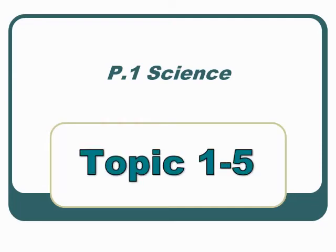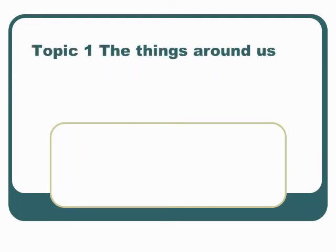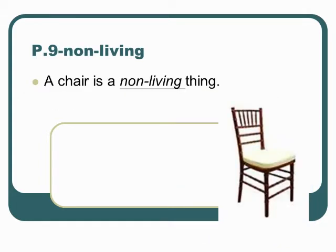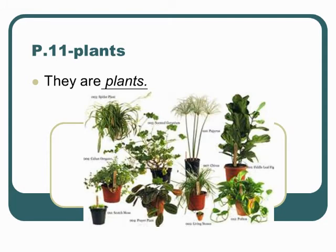P1 Science, Topic 1: The Things Around Us. Page 9. Living: Humans, animals and plants are living things. Page 9. Non-living: A chair is a non-living thing. Page 11.